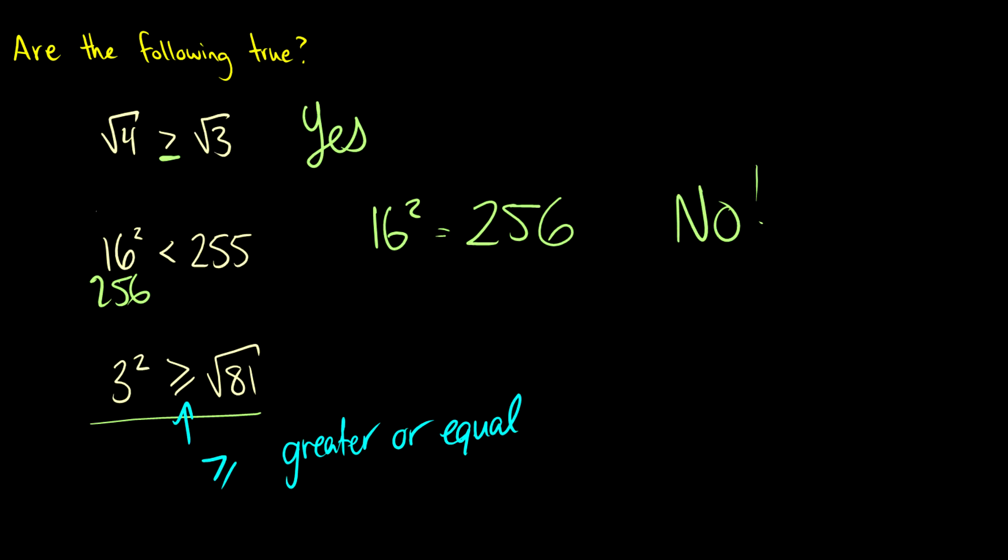So what is 3 squared? 3 squared is 3 times 3. That's 9. What is the square root of 81? What times what equals 81? Well that's 9.